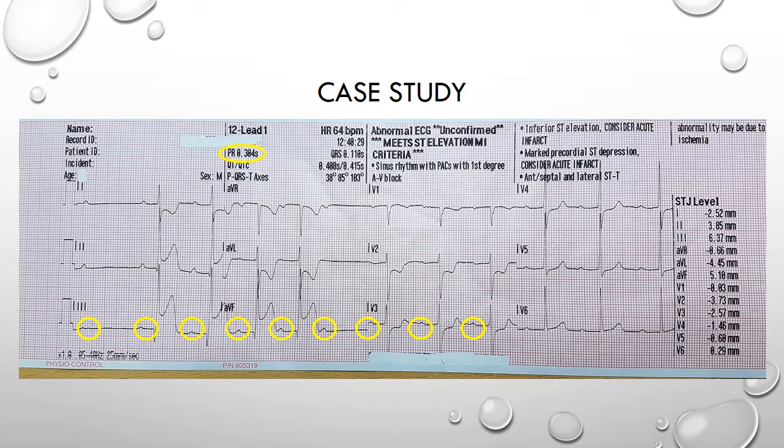Another finding we have with this ECG is an obvious AV block. The blood supply to the AV node in the vast majority of cases — something like 90% — comes from the nodal branch off the RCA.